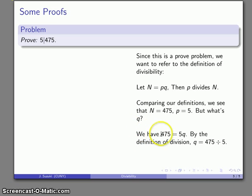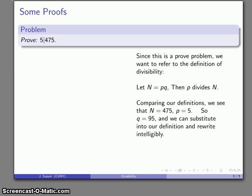Since N equals p times q, and this is a division problem, q is going to be 475 divided by 5, which works out to be 495.